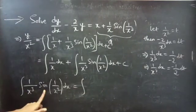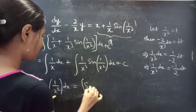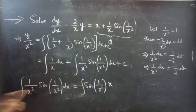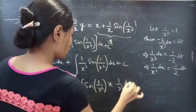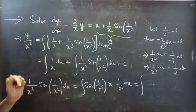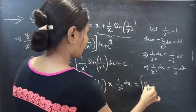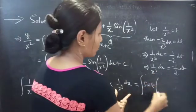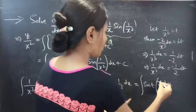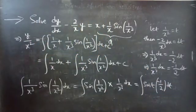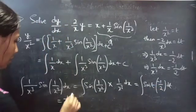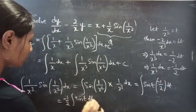Now let's rewrite the integrand. The integral of sine(1/x²)·(1/x³) dx becomes the integral of sin(t) times minus (1/2) dt. Since minus 1/2 is a constant, we bring it outside: minus (1/2) times the integral of sin(t) dt.